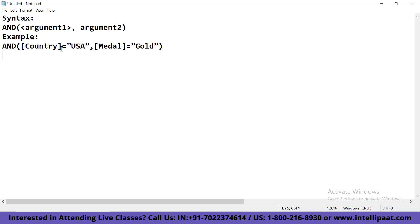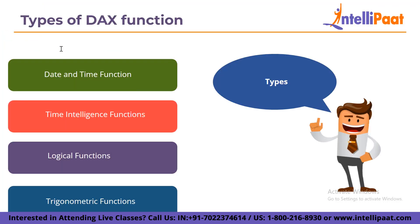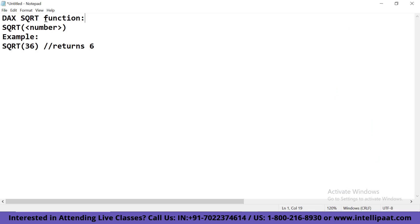The next function is trigonometric or mathematical functions. These functions are very similar to the mathematical and trigonometric functions of Microsoft Excel and are used to perform all sorts of calculations in Power BI. Some popular mathematical and trigonometric functions include SQRT. For example, the DAX SQRT function returns the square root of a number. So SQRT(36) will return 6. It's pretty simple.